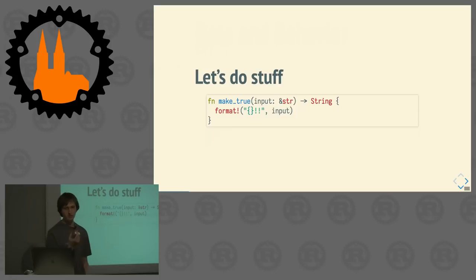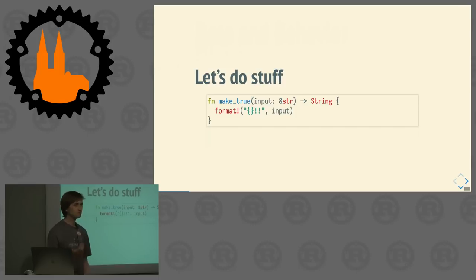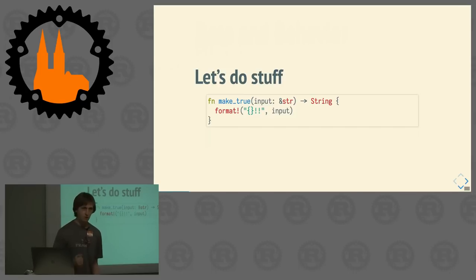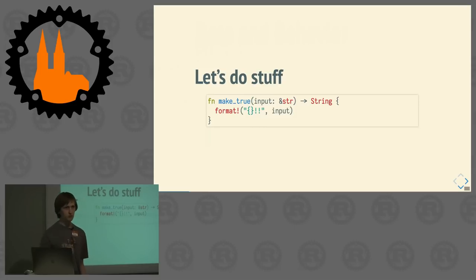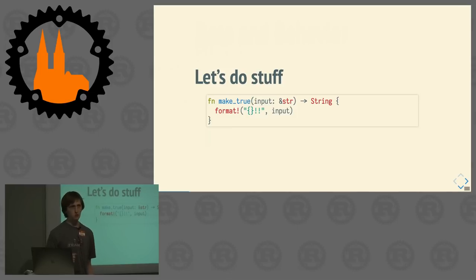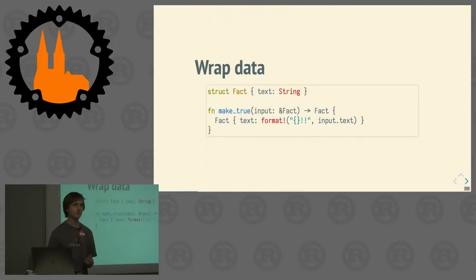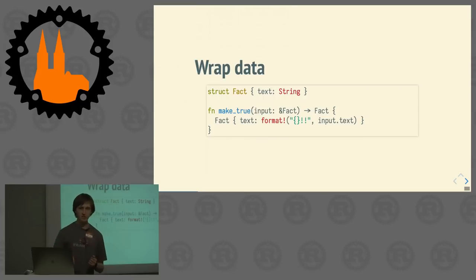It takes as input parameter a string slice and gives you back a string. How do you make stuff true? You shout them, obviously, by adding exclamation marks at the end. We can now make string slices true. We maybe want to represent our data in a more domain-specific way — for example, if we are actually dealing with a Fact. We may not want to take a string slice, but a reference to a Fact. This Fact is just a struct which has one field called text, and it is a String.